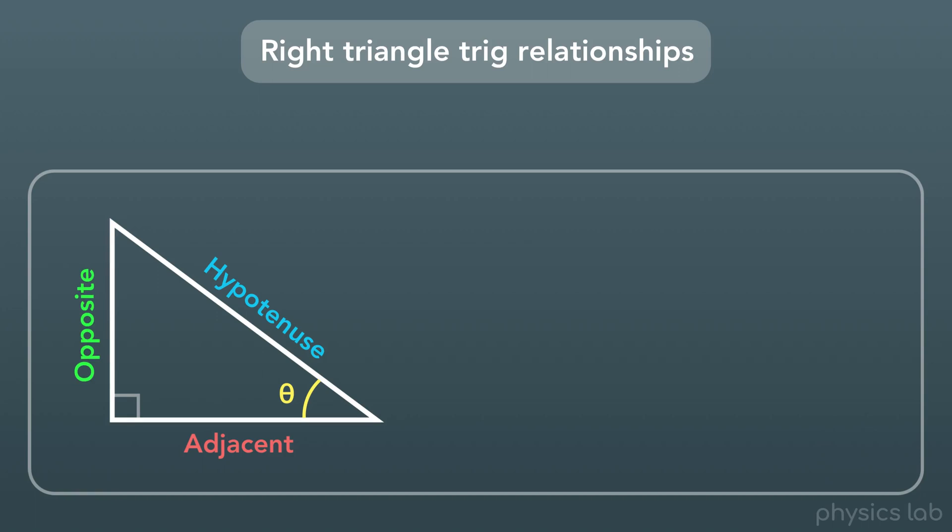So now that we've labeled this triangle, let's look at the relationships between the side lengths and this angle theta. The first one is called sine, written as SIN. Sine of theta is equal to the opposite side length divided by the hypotenuse side length.